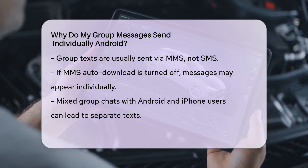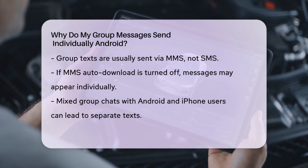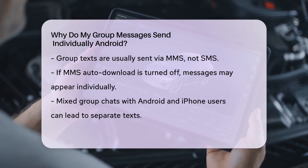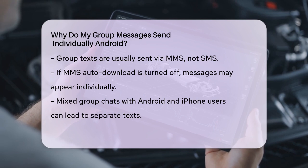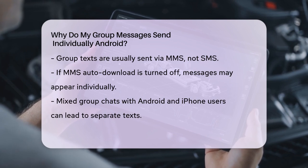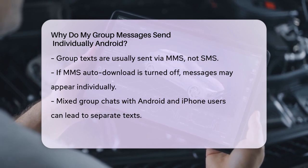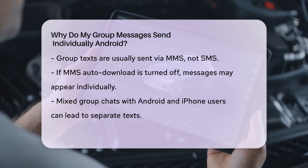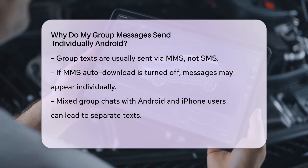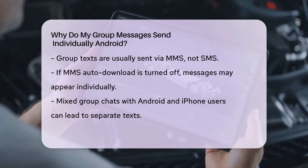Additionally, if you're in a group chat with both Android and iPhone users, the messages might come through as individual texts to you. This is because iPhones use a different messaging protocol when in group chats with non-iPhone users, which can cause the messages to appear as individual texts rather than a group conversation.